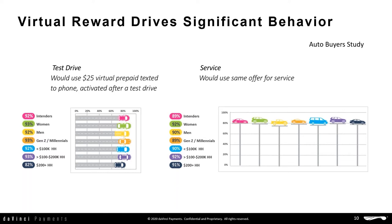We did a national auto study. At the top of the stack are intenders — people intending to buy a car in the next 18 months. We talked to women, men, different generations and incomes and said: what if we gave you a virtual prepaid reward that we texted you, and as soon as you took a test drive you could activate it — would you do that? The vast majority said they would. This is a tool that is part of Brand Accelerator, and it also shows the willingness of people to use virtual products.